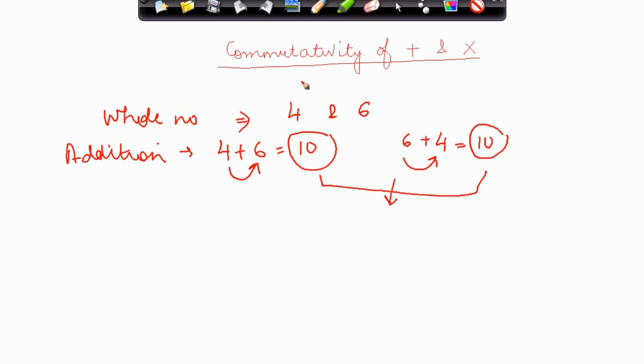Now similarly, one has to see whether the whole numbers are also commutative for multiplication. Again, what do we mean by commutativity of multiplication?